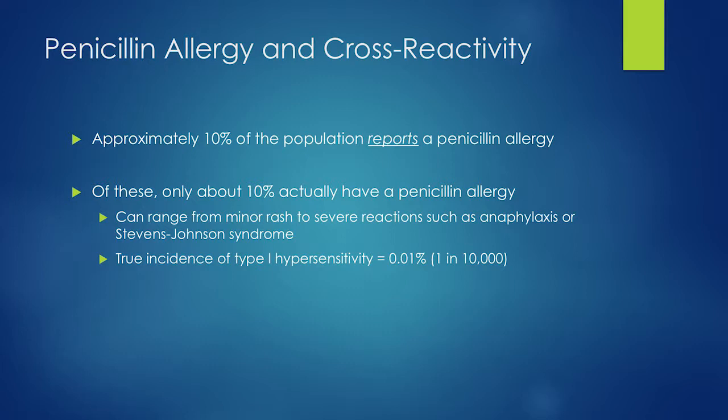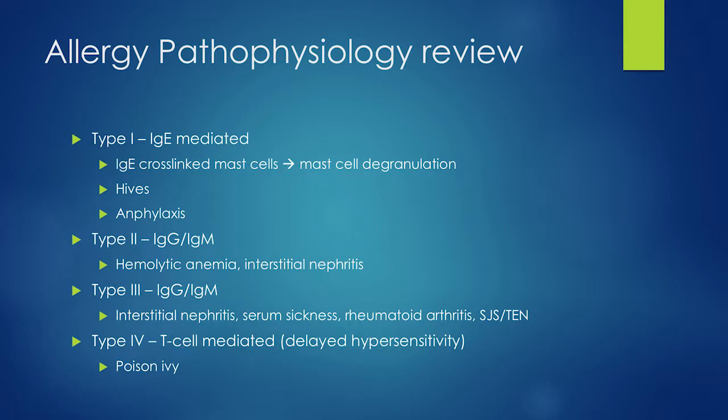Penicillin allergy and cross-reactivity: 10 percent — or 1 in every 10 patients — who walk into your emergency room will say they're allergic to penicillin. Of these, only about 10 percent truly have a penicillin allergy, but these allergies can range from a minor rash to full-blown anaphylaxis or Stevens-Johnson syndrome. The true incidence of a Type 1 hypersensitivity or anaphylaxis to any antibiotic is around 0.01 percent — about 1 in 10,000.